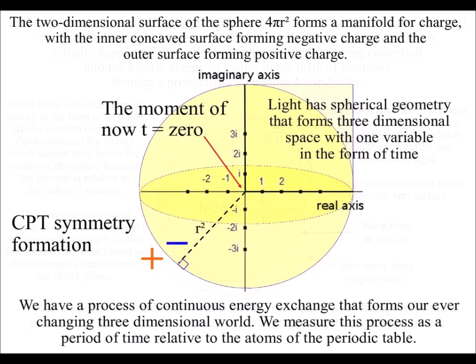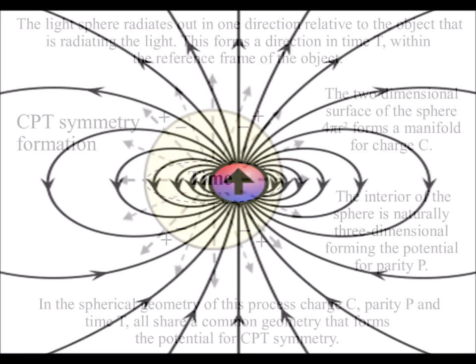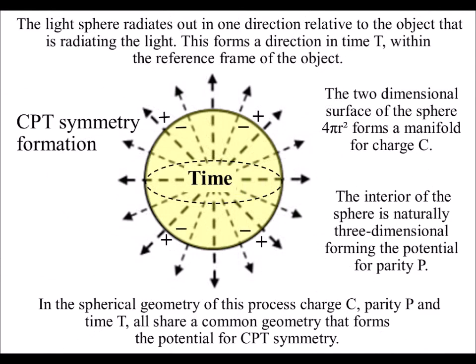Spheres always intersect as circles, and this is why we have 2pi in the mathematics of quantum mechanics. The two-dimensional surface of the sphere forms a manifold or boundary condition for positive and negative charge. The inner concave surface forms negative charge, and the outer surface forms positive charge.